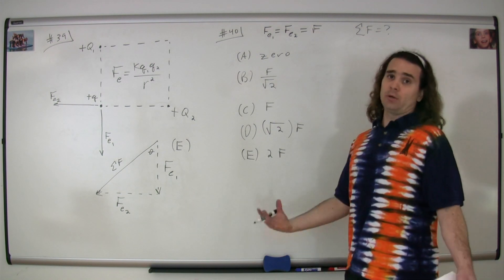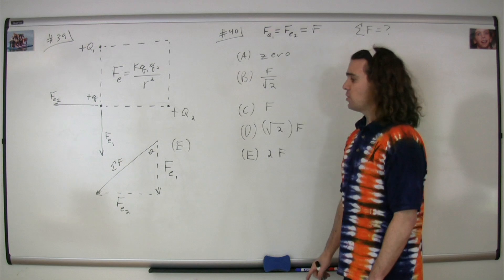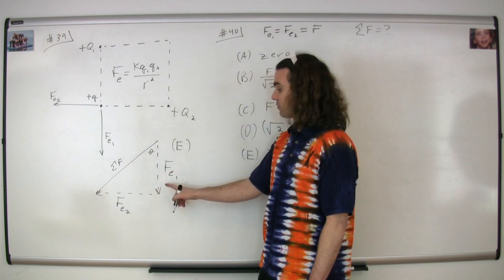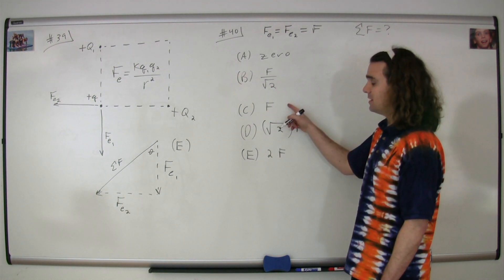First off, you know it shouldn't be zero. We have some net force. Second, you know that the hypotenuse of a triangle is going to be greater than either of the two sides, so it cannot be B or C.